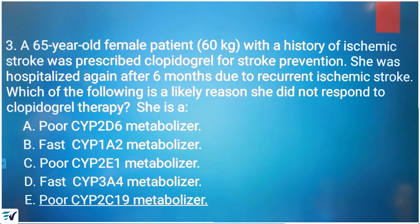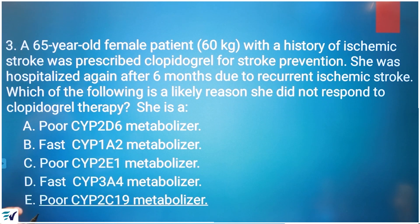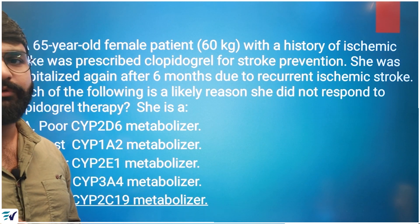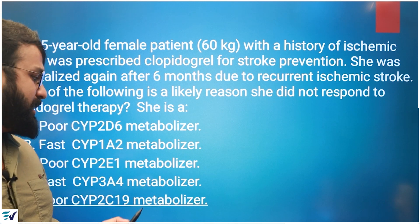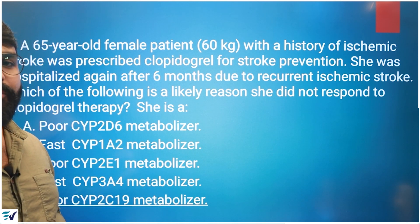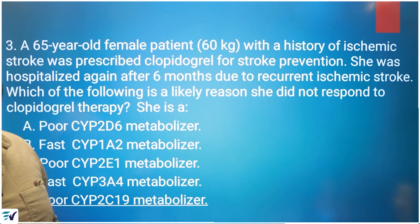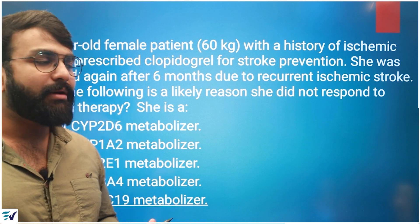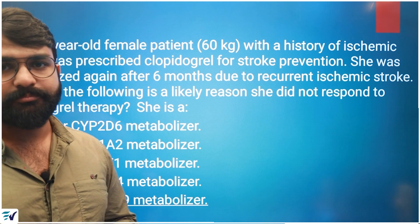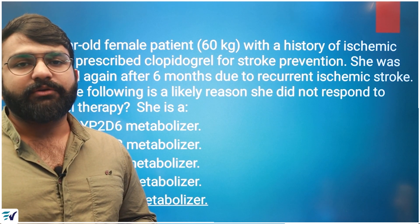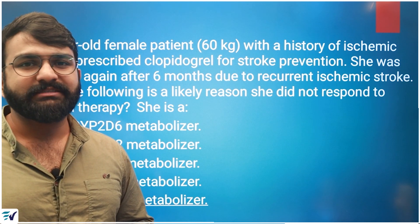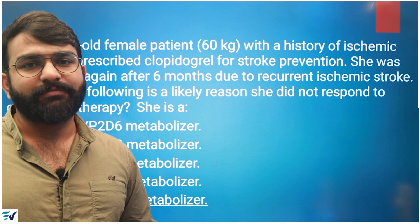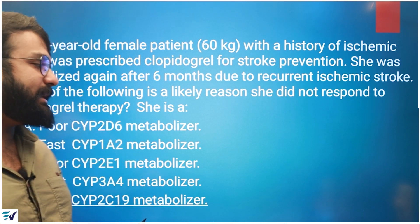There are 5 options. We will select the most accurate answer. The CYP enzymes involved are CYP-2D6, CYP-1A2, CYP-2E1, CYP-3A4, and CYP-2C19. CYP-2C19 is a key isoenzyme of the CYP-450 system. We have many examples involving CYP-450.